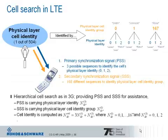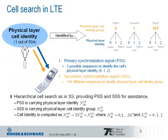As in wideband CDMA, LTE uses a hierarchical cell search procedure. The LTE radio cell is identified by a cell identity, which is comparable to the scrambling code used to separate between base stations and cells in wideband CDMA. To avoid expensive and complicated network planning, the number of physical layer cell identities is 504, which is sufficiently large. These identities are divided into 168 unique physical layer cell identity groups, where each group consists of three physical layer identities.